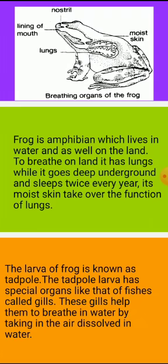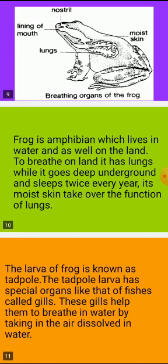The larva of a frog is known as the tadpole. The tadpole larva is a totally aquatic organism, so it has special organs like those of fishes — called gills. The tadpole larva breathes with the help of gills, which help them take in air dissolved in water.